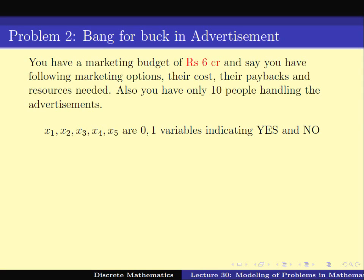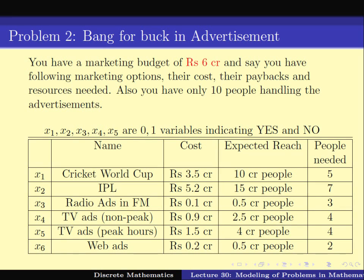One way to start modeling it is to define variables x1, x2, x3, x4, x5 representing whether you are going to invest in each particular ad option or not — it is a 0 or 1 decision. If x1 is 1, that means you invest in cricket world cup; if x1 is 0, you don't. If x2 is 1, you are investing in IPL, and so on. The expected reach is 10 crore times x1 — if x1 is 0 you get 0, if x1 is 1 you get 10 crore people. We want to maximize the total expected reach.